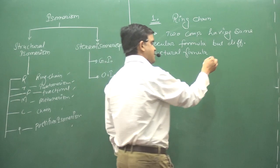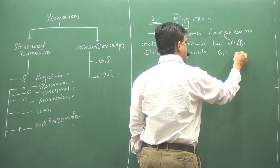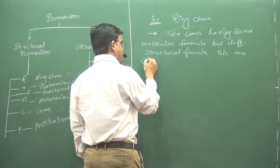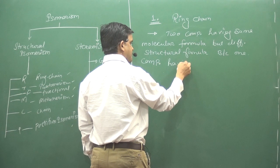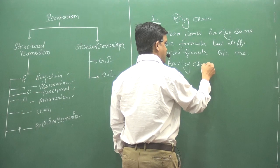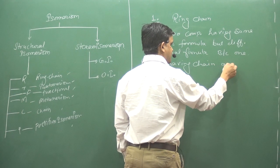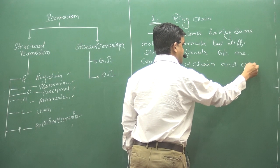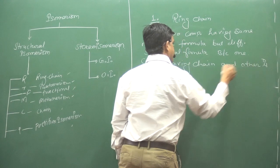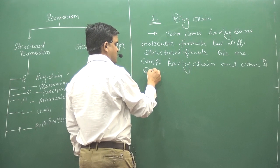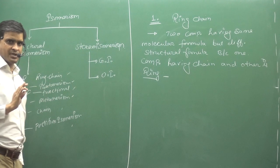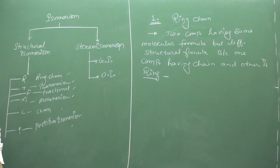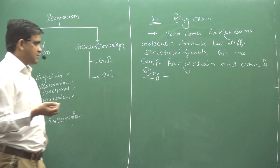Because one compound having chain and other is ring. So this thing you have, this is very easy. You can do very easily. One is ring and other is chain.